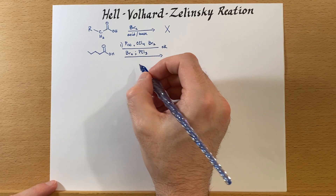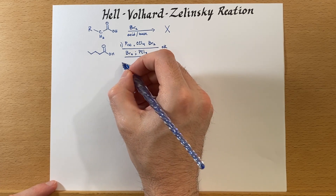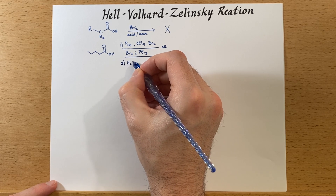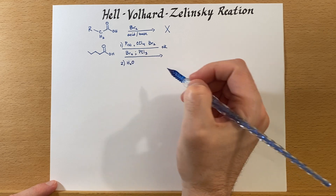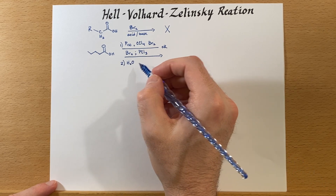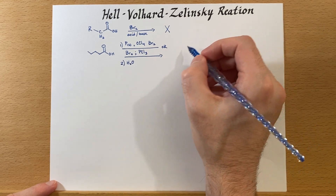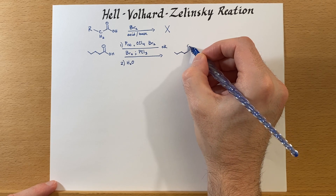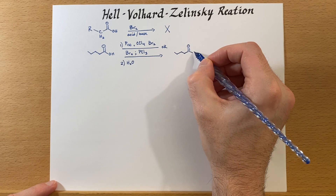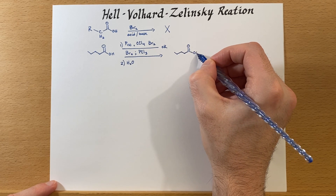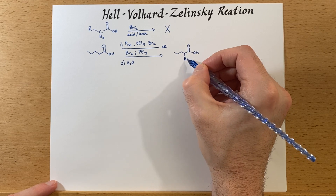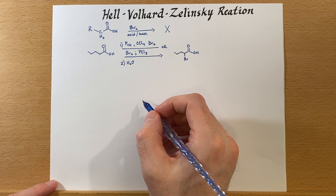The second step is then to add water. When we do this, we will make the carboxylic acid with the halide — the bromide — right at the alpha position.